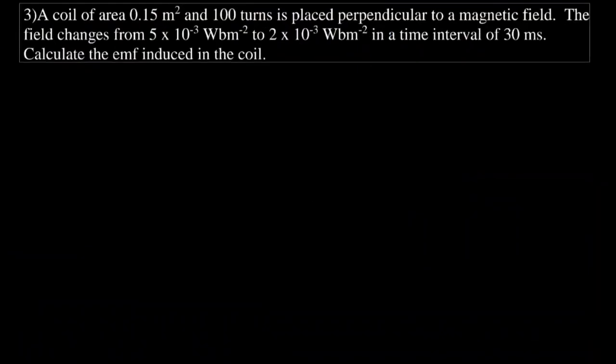Question 3: A coil of area 0.15 m² and 100 turns is placed perpendicular to a magnetic field. The field changes from 5×10⁻³ Weber per meter squared to 2×10⁻³ Weber per meter squared in a time interval of 30 milliseconds. Calculate the EMF induced in the coil. We know that EMF equals negative N multiplied by the difference in magnetic flux divided by the difference in time.